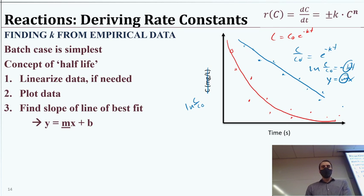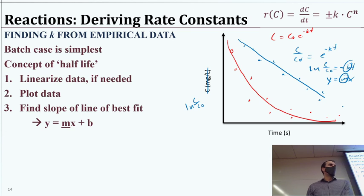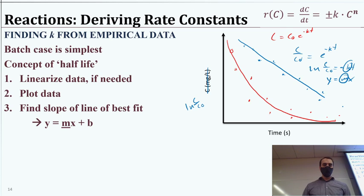We can do this for zero order, first order, and second order equations — we just have to get the linearization correct, and then the slope gives us K directly.